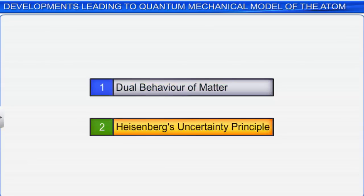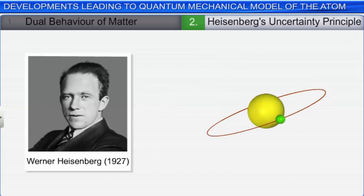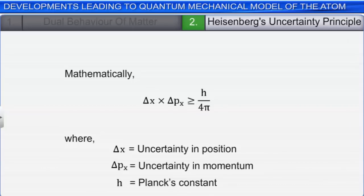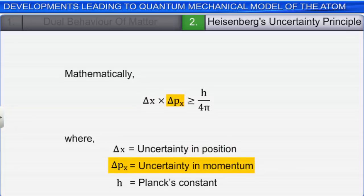Let's now look at the Heisenberg uncertainty principle. In 1927, a German physicist Werner Heisenberg took forward the concept of dual behavior of matter and radiation to give a principle about the uncertainties in simultaneous measurements of position and momentum of small particles. He proposed that it is impossible to measure simultaneously and accurately the exact position and momentum of a small particle like an electron. Mathematically, Heisenberg's uncertainty principle can be expressed as: Δx × Δp_x ≥ h/4π, where Δx is the uncertainty in position and Δp_x is the uncertainty in the momentum of the particle.